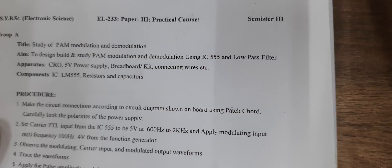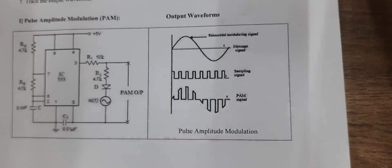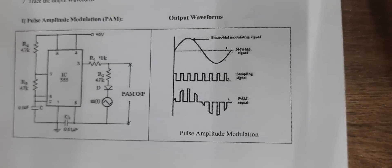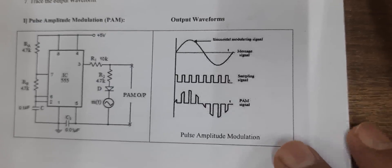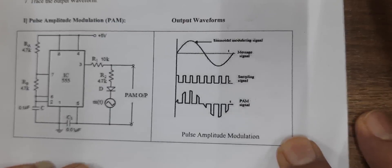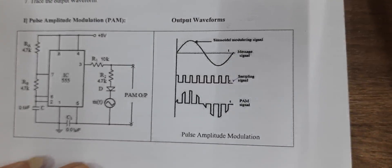The apparatus required are a cathode ray oscilloscope and a kit using IC555. In this diagram, you can see a circuit for an astable multivibrator using IC555. The IC555 generates a square wave which is used here as a sampling signal.